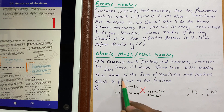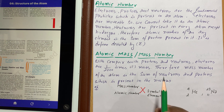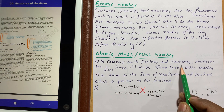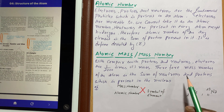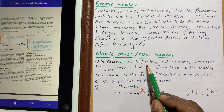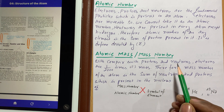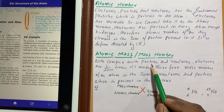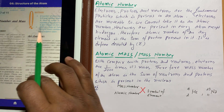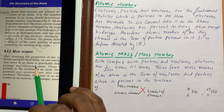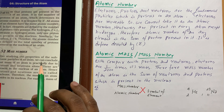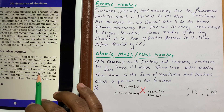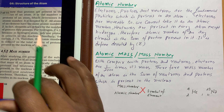The mass of an atom is the sum of neutrons and protons present in the nucleus. After studying the properties of subatomic particles, we conclude that the mass of an atom is partially due to protons and neutrons alone, since they are present in the nucleus. Therefore, protons and neutrons are also called nucleons.